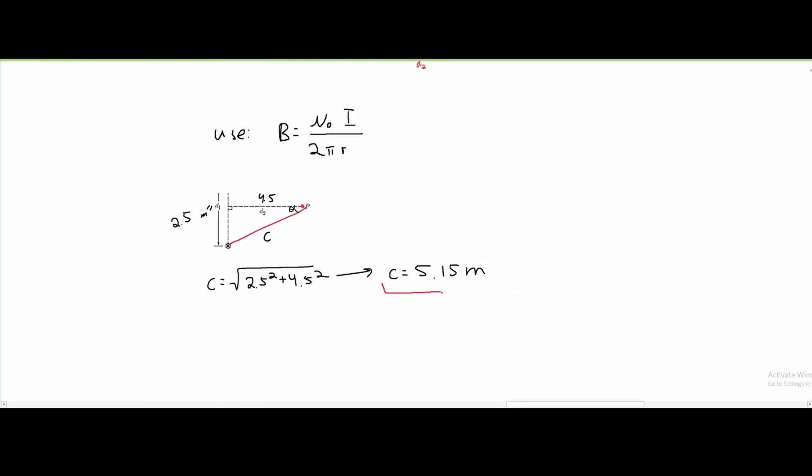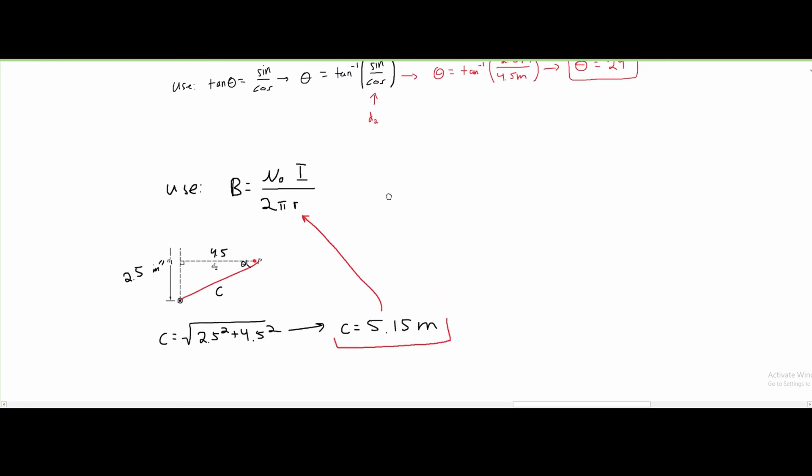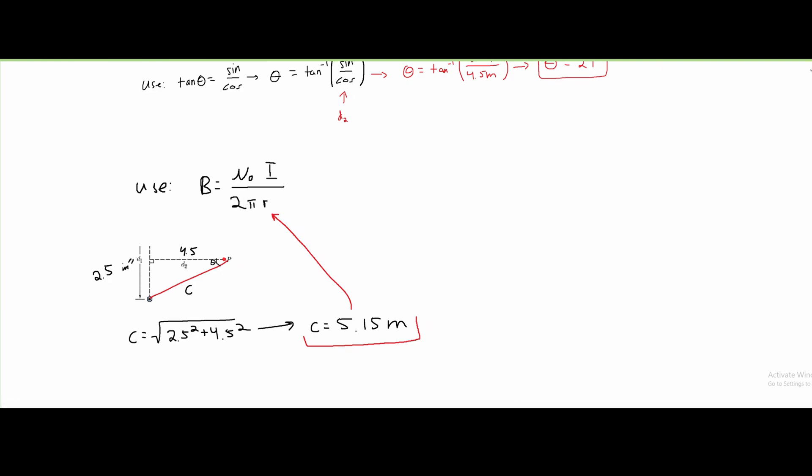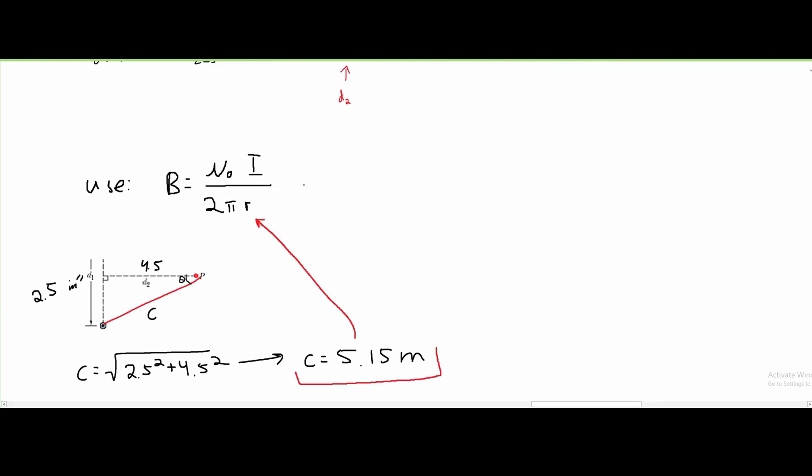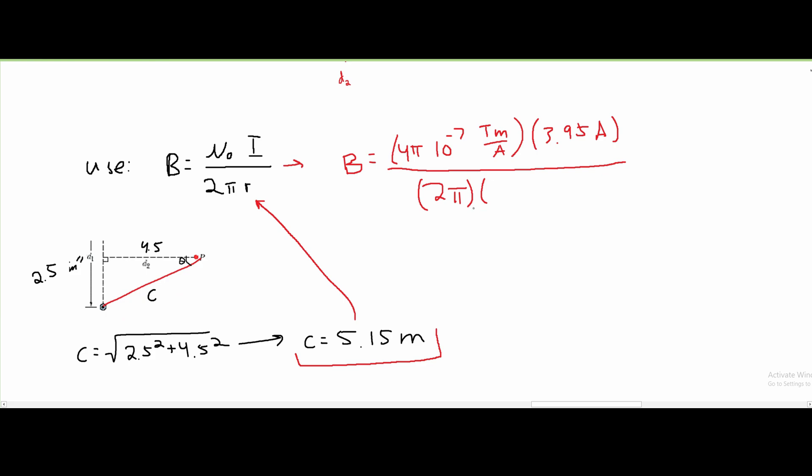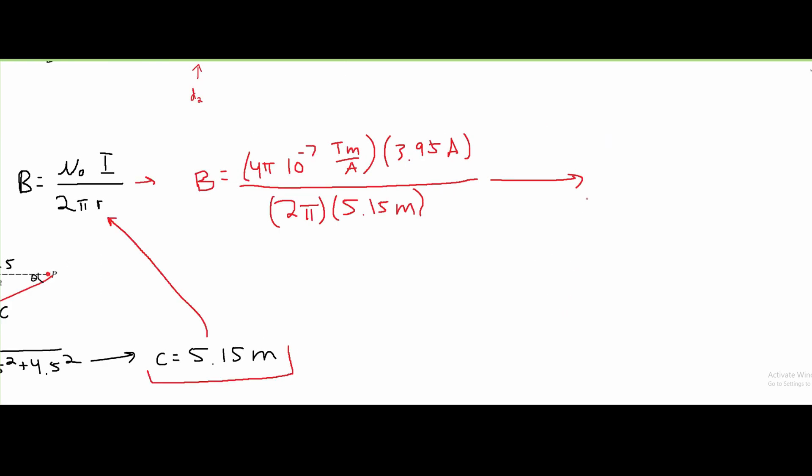After we have this, we can take it and plug it in for our r. Now that we have all of these values, we can plug everything in. Plugging in r = 5.15 meters, we get that B is approximately 1.5×10⁻⁷ teslas.